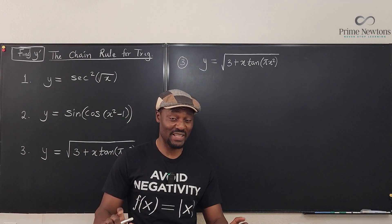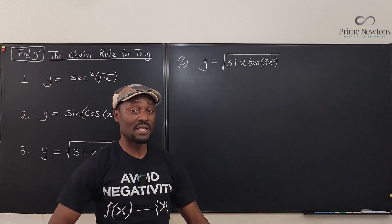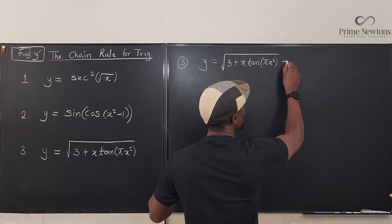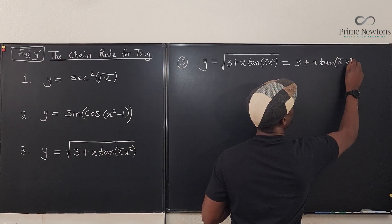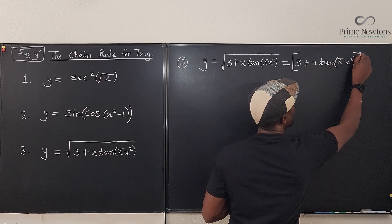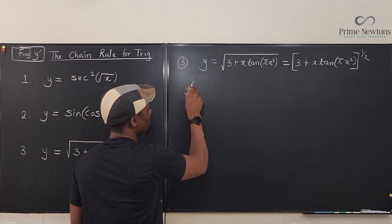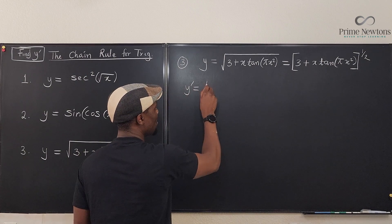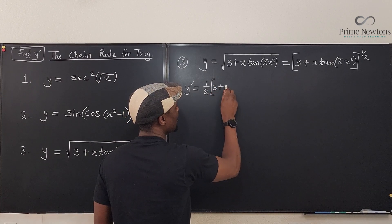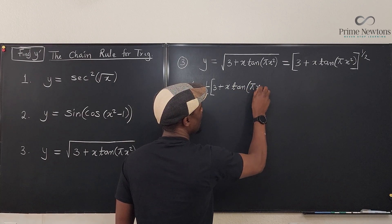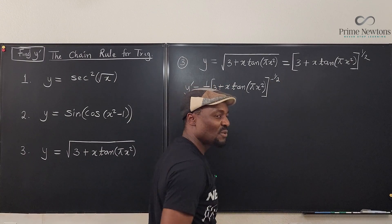This third one is a little tricky. Remember my recommendation: whenever you have square roots or similar expressions, just make it an umbrella power. So I'm going to rewrite this as three plus x times tangent of pi x squared, everything raised to power one half. Now beginning the differentiation, y prime is equal to — deal with the outside first — it's going to be one half times that expression raised to power negative one half.